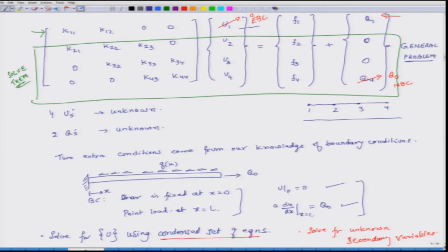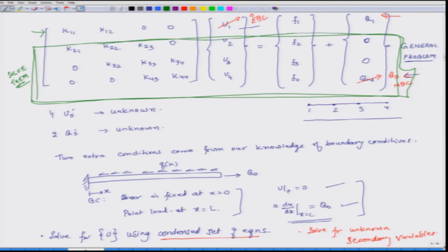The second boundary condition specified was that the force at x equals L is Q naught, which we had applied in the last equation. I had mentioned that we look at the assembled equations and use only those equations for which u is not known to solve for the unknown values of u. But I should have additionally mentioned that when we look at those equations captured in the green box, we have eliminated one row from the whole system of equations and we should also eliminate one column.